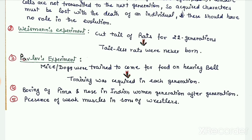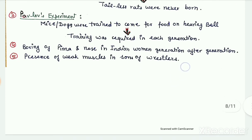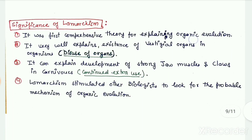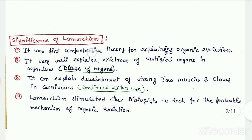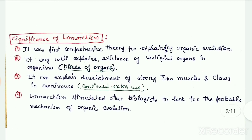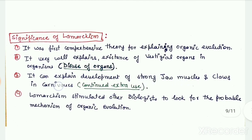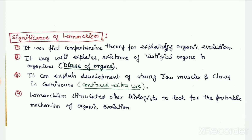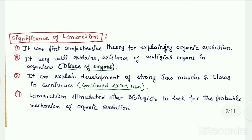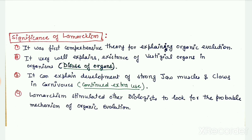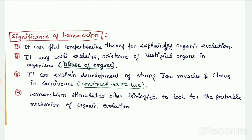There is also the famous Pavlov's experiment, which also goes against Lamarck's theory of inheritance of acquired characters. In spite of much criticism, Lamarckism remains a very significant theory of organic evolution as it was the first comprehensive theory to explain the process of organic evolution. It also explains the existence of vestigial organs and the presence of strong jaw muscles and claws in carnivores. Moreover, Lamarckism stimulated other biologists like Darwin to look for the probable mechanism of organic evolution. That is all about today's lecture on Lamarckism, or the theory of inheritance of acquired characters.